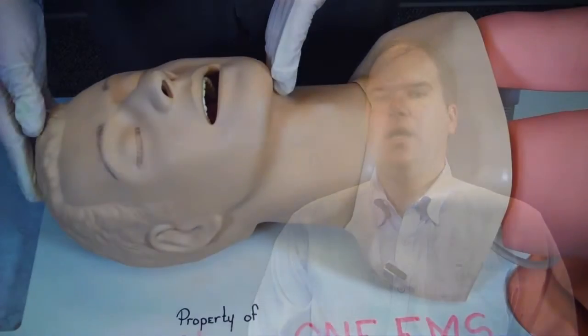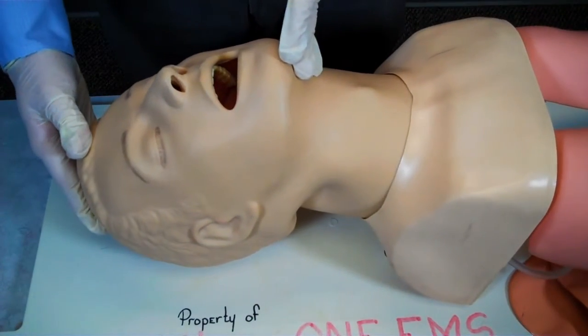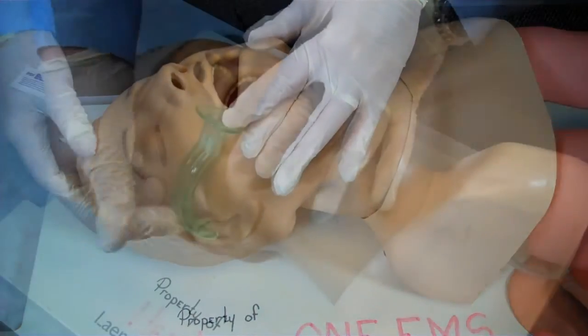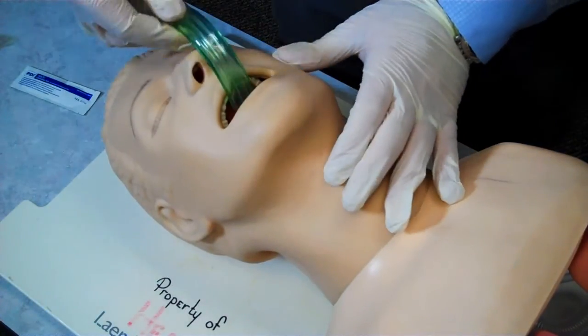I will now manually open the airway and ensure the mouth and oral pharynx do not require suctioning. I now elevate the tongue and insert a simple adjunct. This could be an oral or nasal pharyngeal airway.